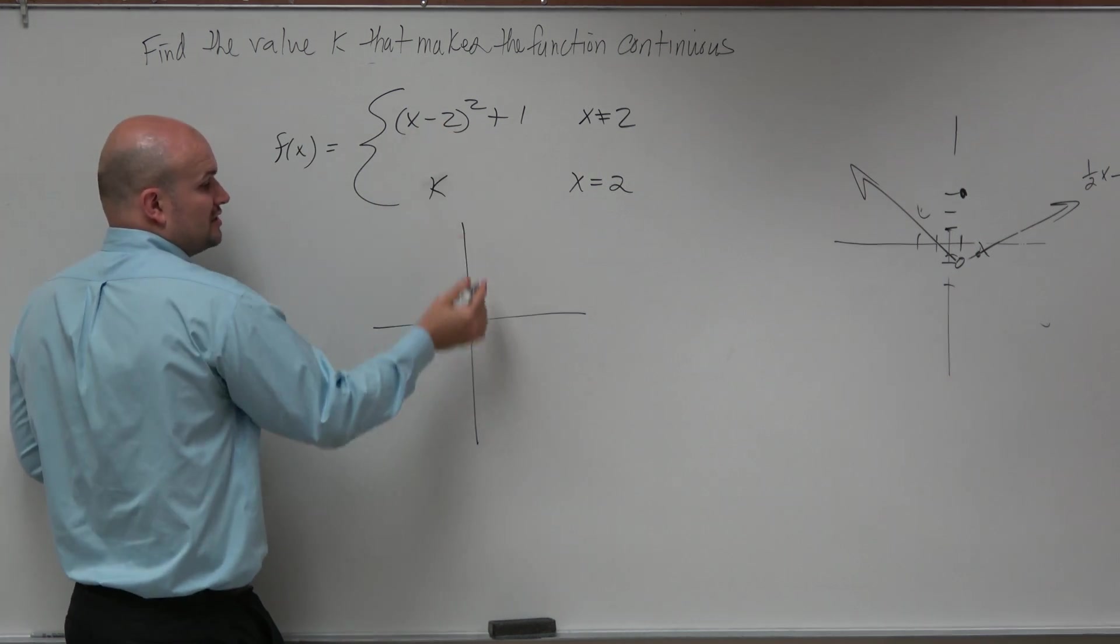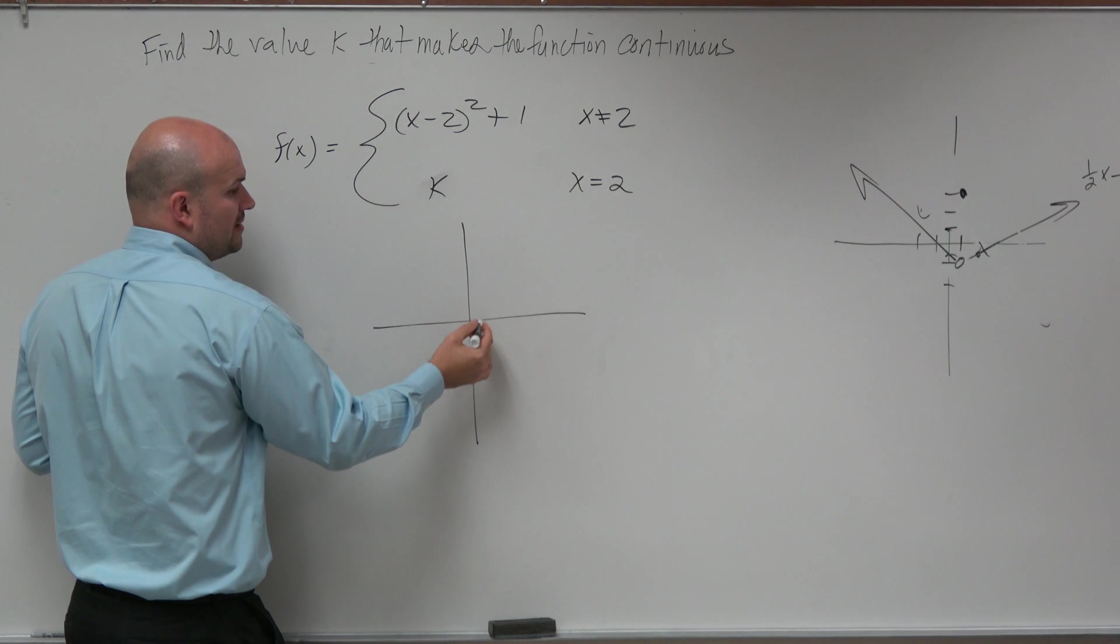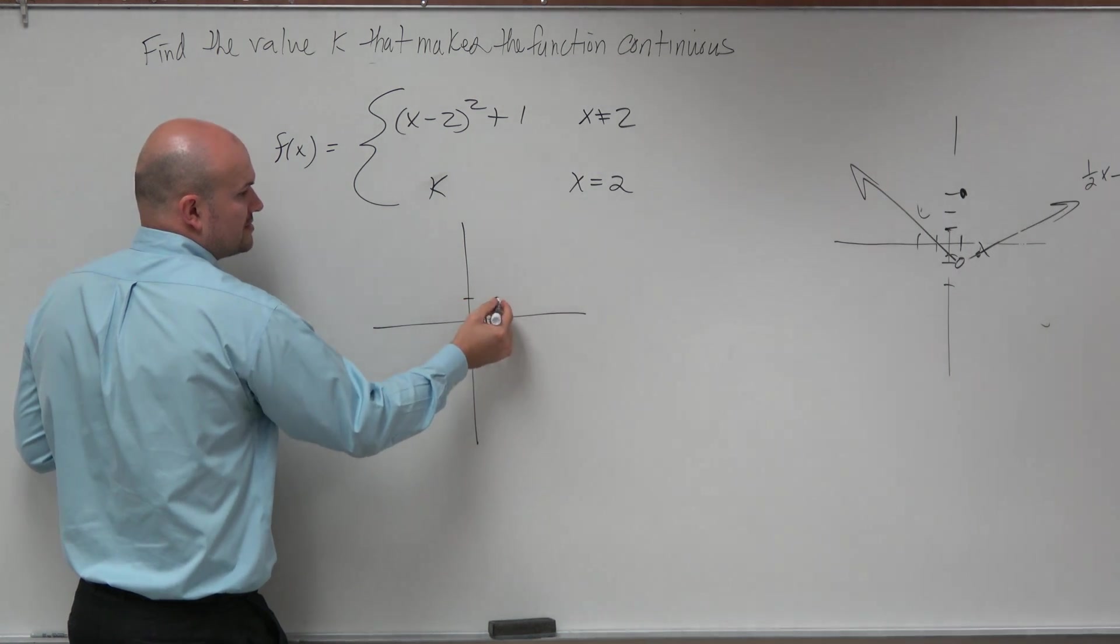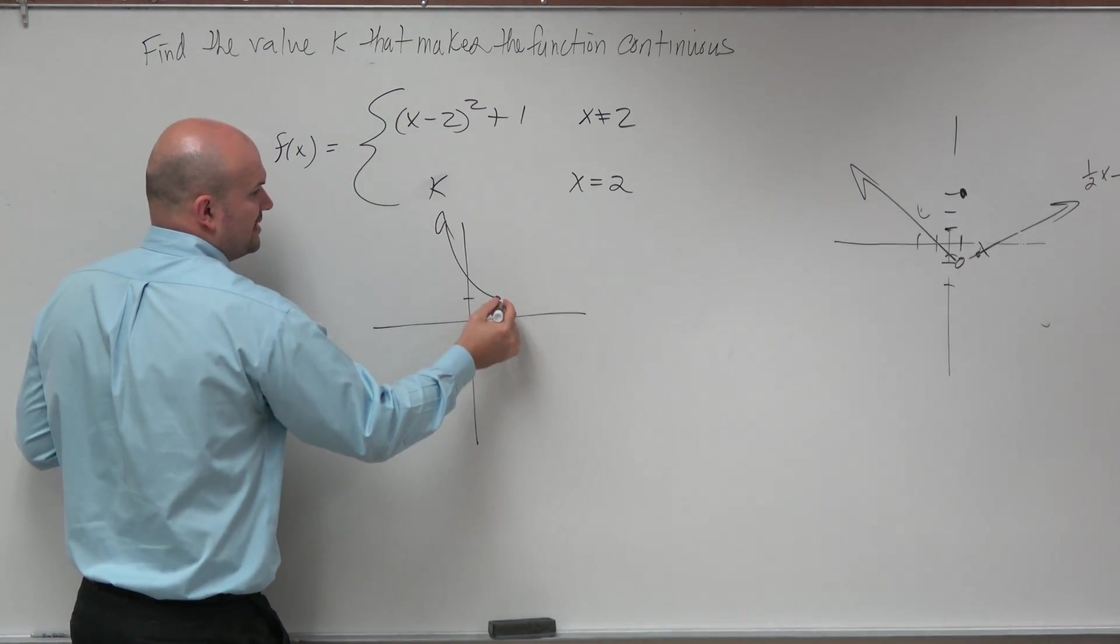This has a transformation of two units to the right, and then one unit up. So one, two, up one unit. So then it should look something like this.